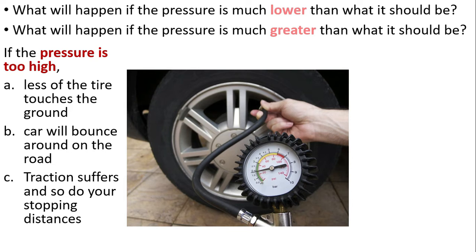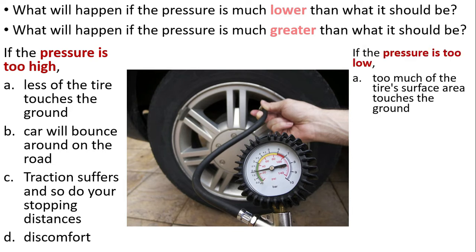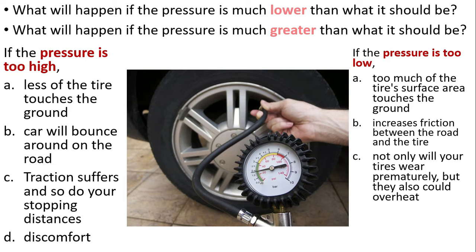Traction is the grip of the tire, so you have discomfort in driving. If the pressure is too low, there's too much of the tire's surface area touching the ground. When the tire touches the ground more often, it increases the friction between the road and the tire. And what happens when there's more friction? It could overheat. At the same time, the tire will be destroyed easily. Lastly, it can lead to tread separation and an accident.